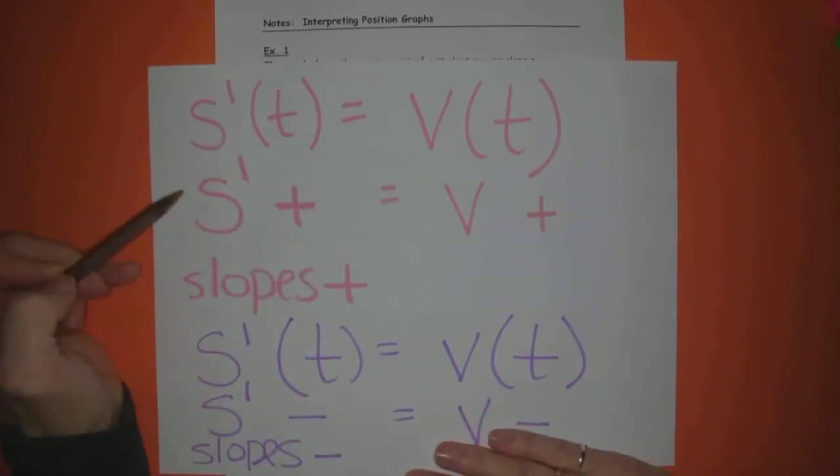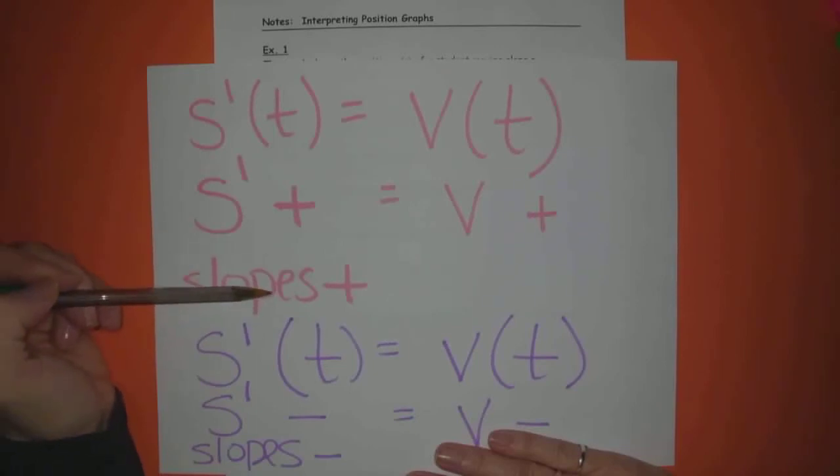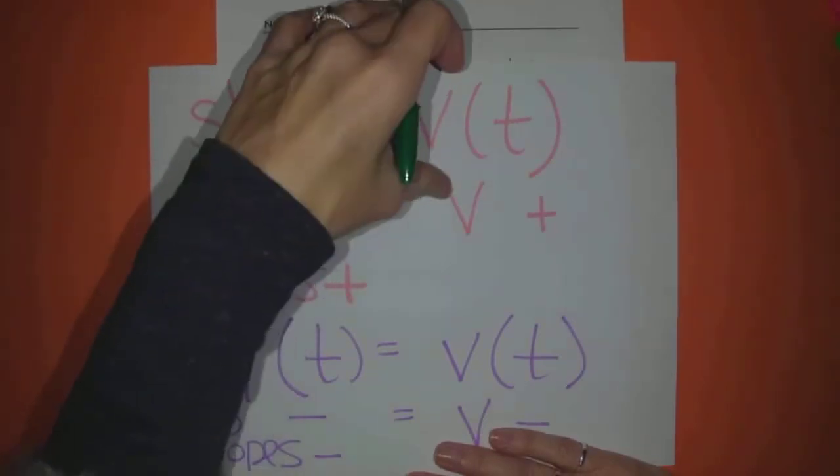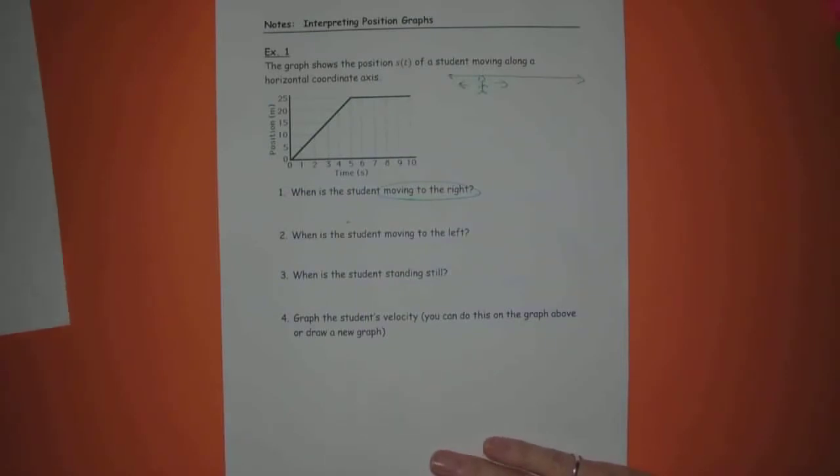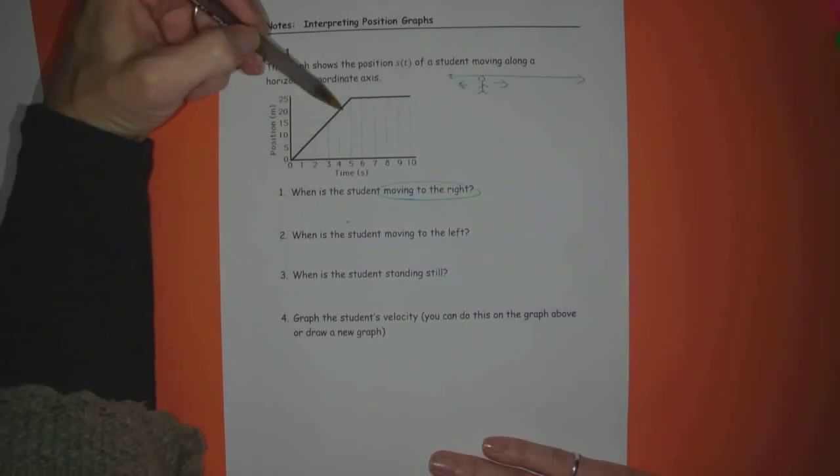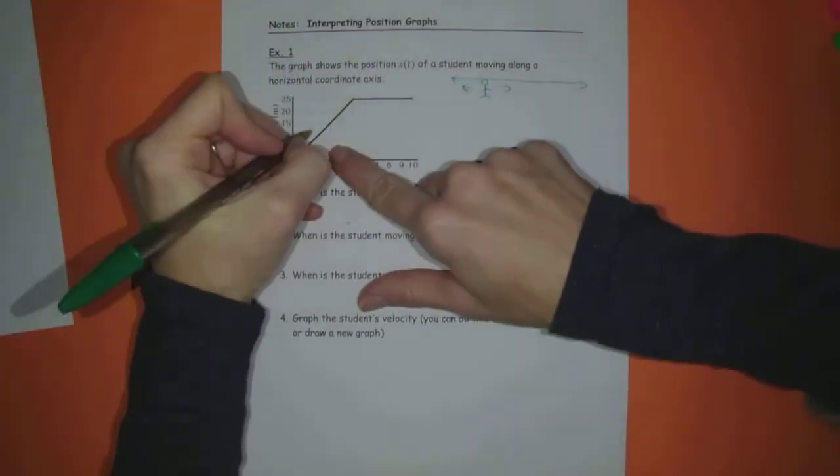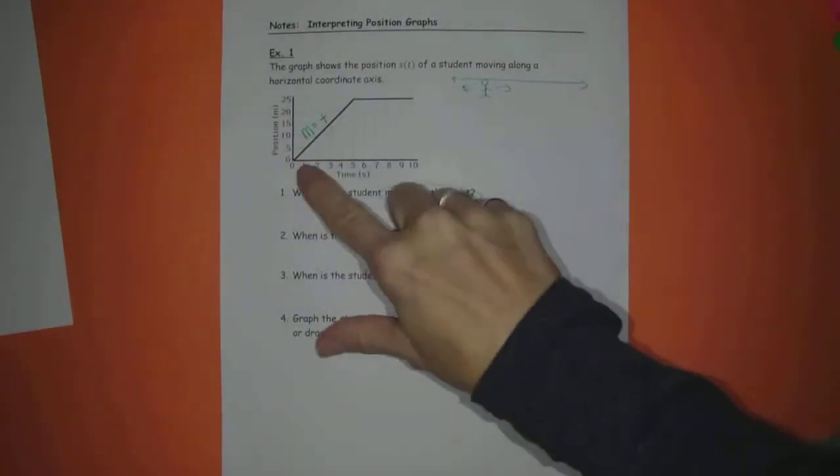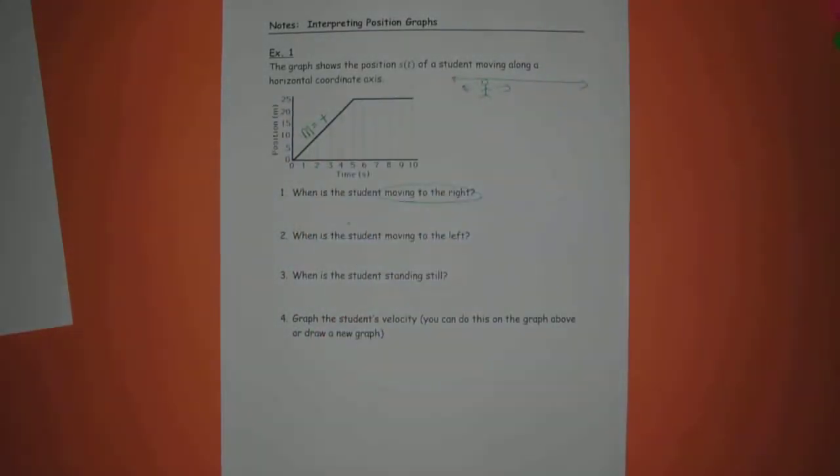Derivative, as we've studied, represents slopes of the tangent lines of your graph. So we are basically looking for where the slopes are positive on the position graph. The rate of change, which is velocity, will also be positive. So when are we moving to the right? Can you see that from 0 to 5, all of the slopes equals a positive. So this would indicate that is rightward movement or positive velocities on the part of the student.